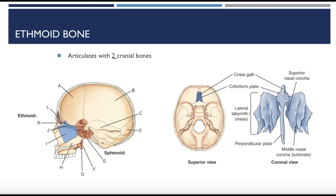The ethmoid bone articulates with two cranial bones: the frontal and the sphenoid. It lies primarily below the floor of the cranium. The cribriform plate is the small upper horizontal portion containing many small foramina through which segmental branches of the olfactory nerves — the nerves of smell — pass.